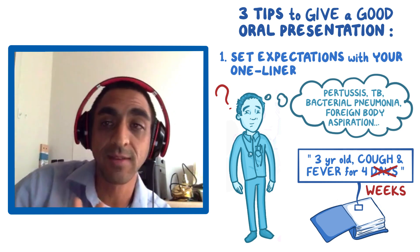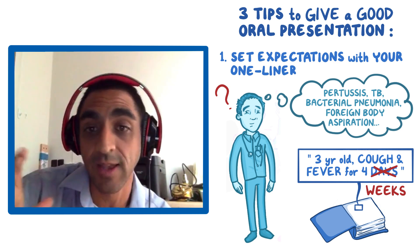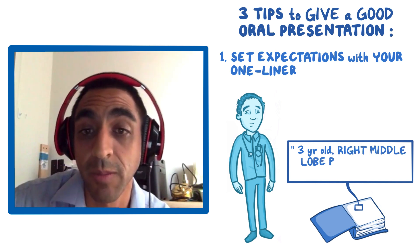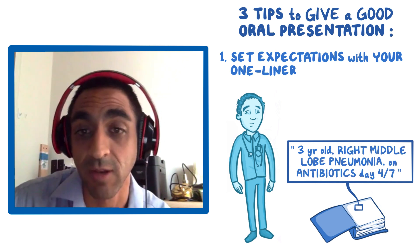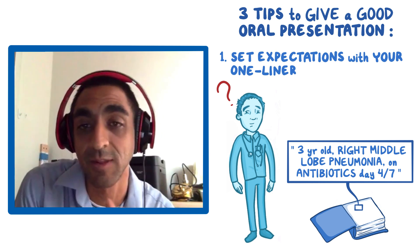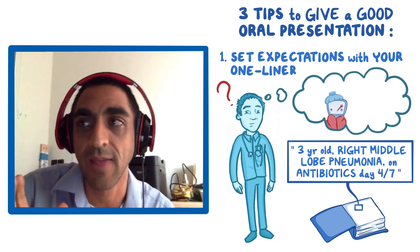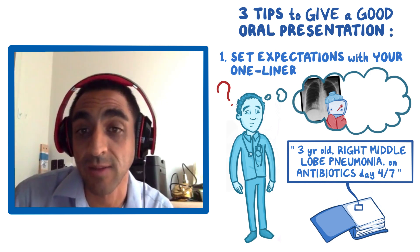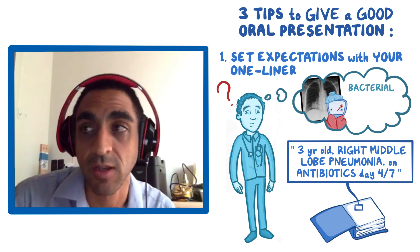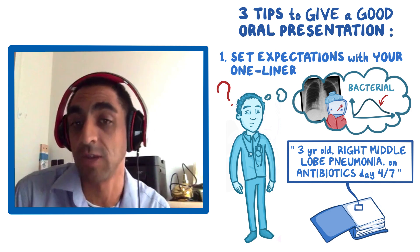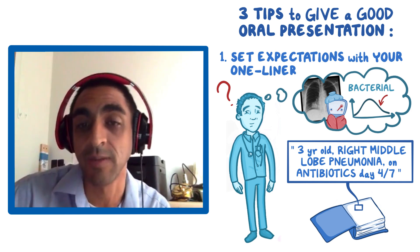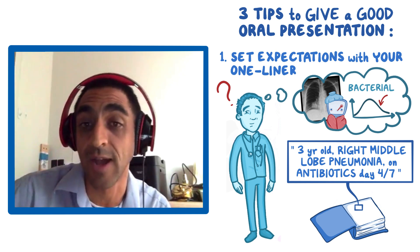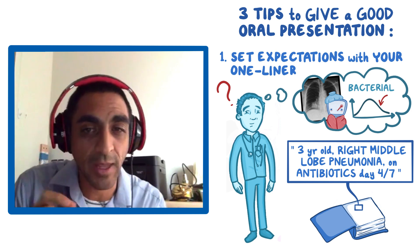Let me give you another example across time — not just the initial presentation. Here's a one-liner from a little later: a three-year-old with a right middle lobe pneumonia on antibiotic day four of seven. Now you say: this is not someone just coming in; they've already been admitted, so they're probably pretty sick. They had a chest X-ray or CT, we think it's bacterial, and they're on day four of seven — so they may be over the worst of it, hopefully on the mend.